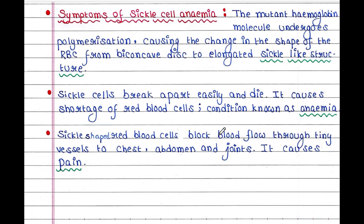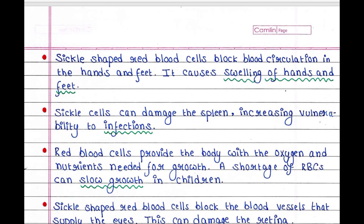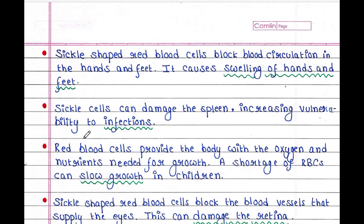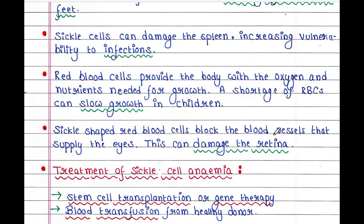Sickle-shaped red blood cells block blood flow through tiny vessels to the chest, abdomen and joints, causing pain. They also block blood circulation in the hands and feet, causing swelling. Sickle cells can damage the spleen, increasing vulnerability to infections. Red blood cells provide the body with the oxygen and nutrients needed for growth, so a shortage of RBCs can slow growth in children. Sickle-shaped red blood cells can also block blood vessels supplying the eyes and damage the retina.